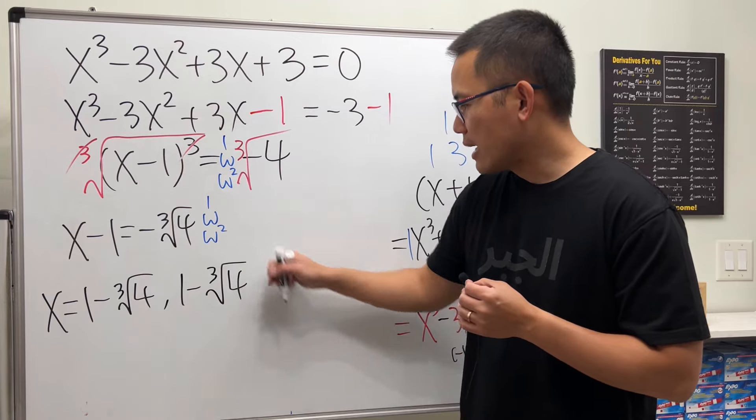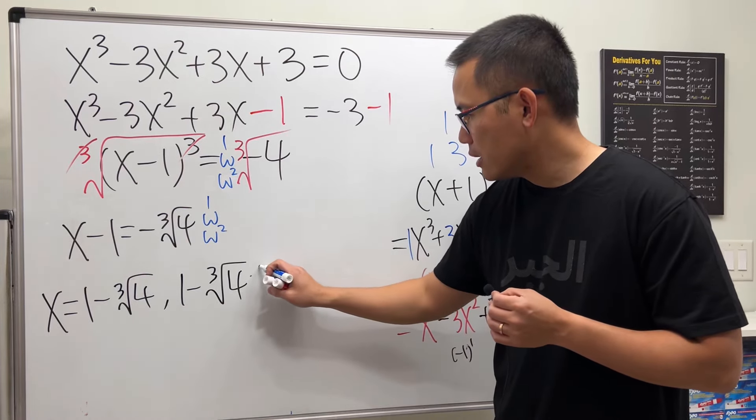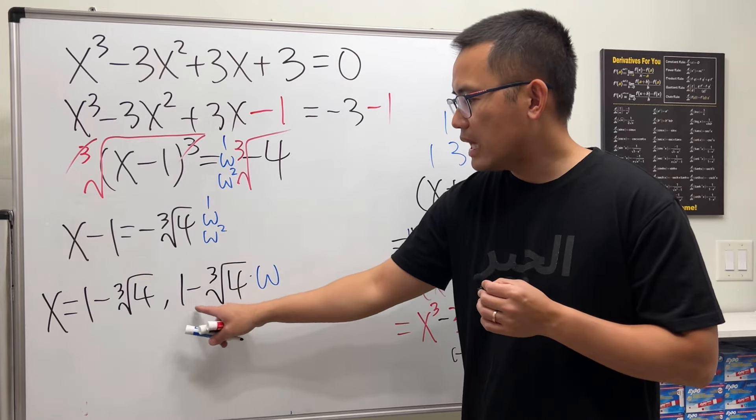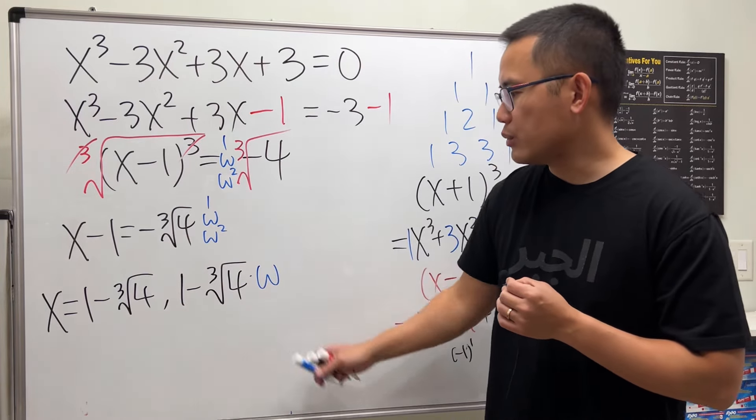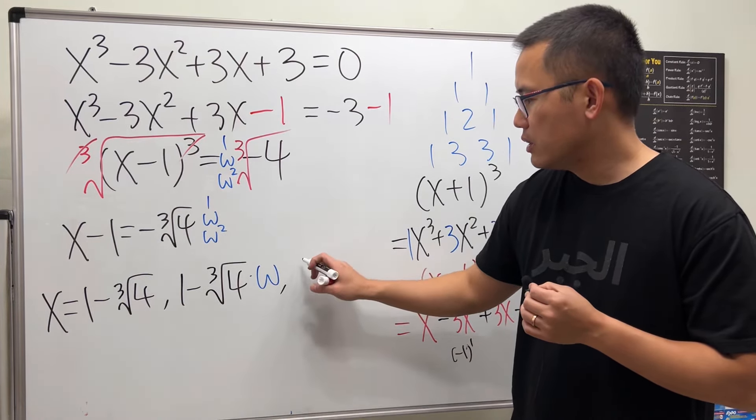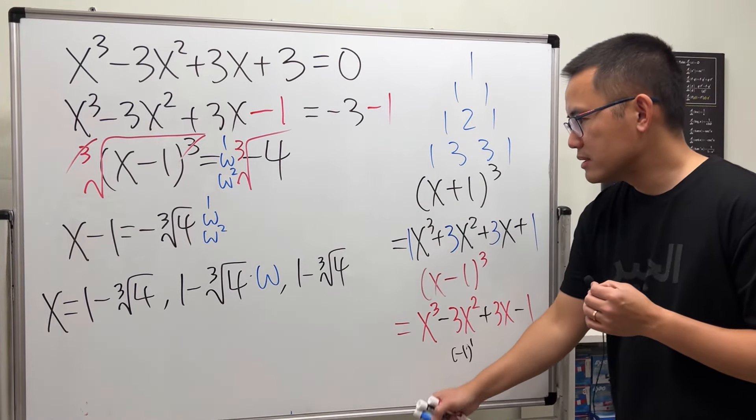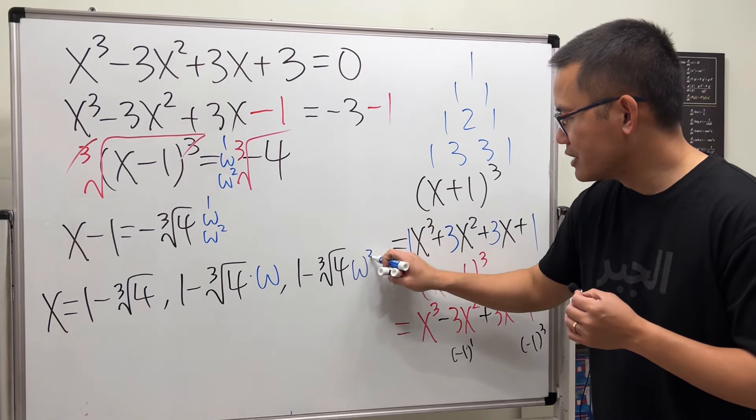Check this out: 1 - ∛4 times 1, next 1 - ∛4 times ω (the omega only multiplies with this part, and after that you do 1 minus the result), lastly 1 - ∛4 times ω².